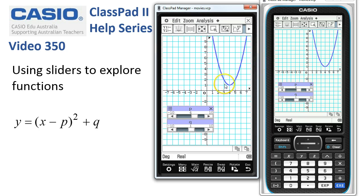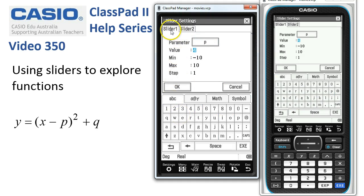We can change these settings. At the moment they're going from negative 10 to 10 on both variables. But by tapping on to the options here and choosing settings, we can choose either slider one for p or slider two for q and modify them.